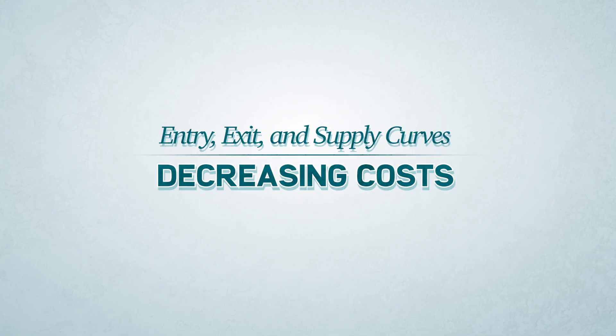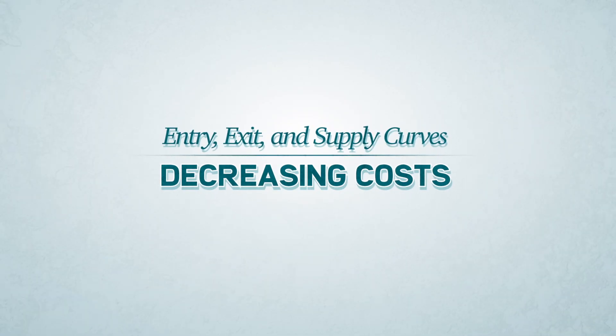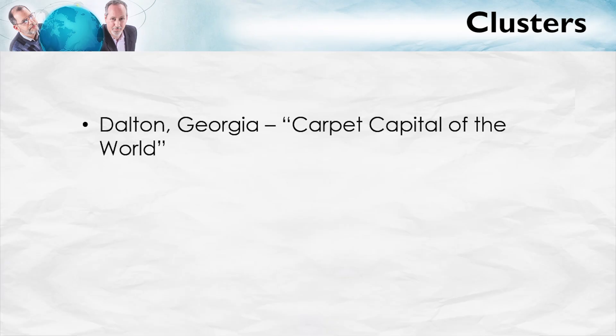Today, we're going to wrap up our discussion of entry, exit, and supply curves by talking briefly about the fascinating case of the decreasing cost industry. What's important and interesting about decreasing cost industries is that we think they explain clusters. If you look around the world, you'll see places like Dalton, Georgia, known as the carpet capital of the world, because about 90% of the world's manufactured carpet is made in this one small town in Georgia.